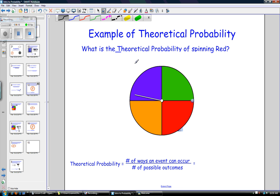So the first example is the same as the other one. What is the theoretical probability of spinning red? This time, we look at the number of ways that we can spin red. Well, there's only one way we can spin red, and there are four possible outcomes. So, the theoretical probability of spinning red is one-fourth.